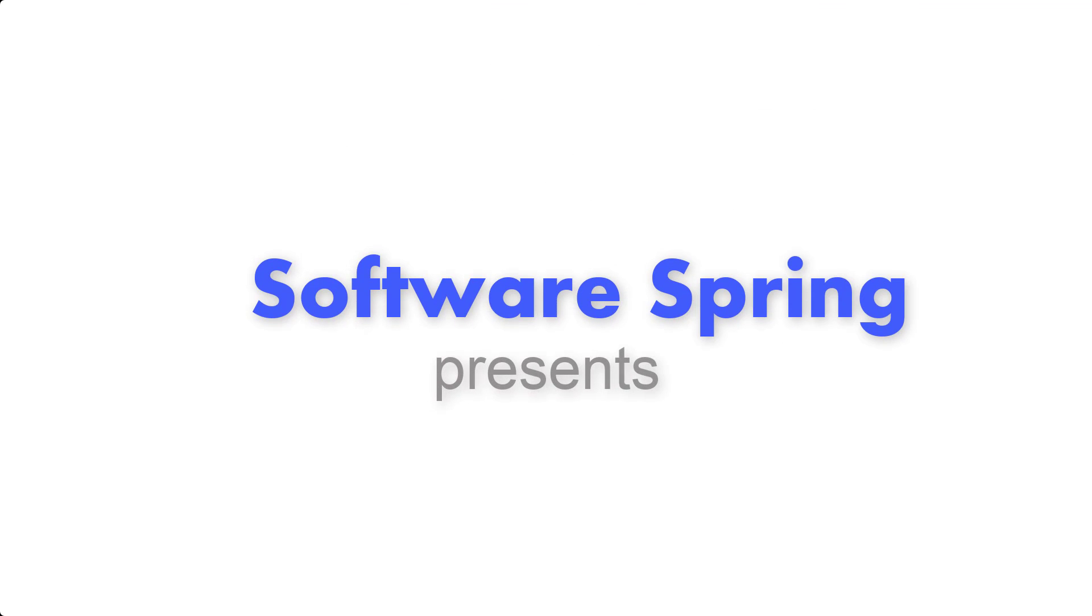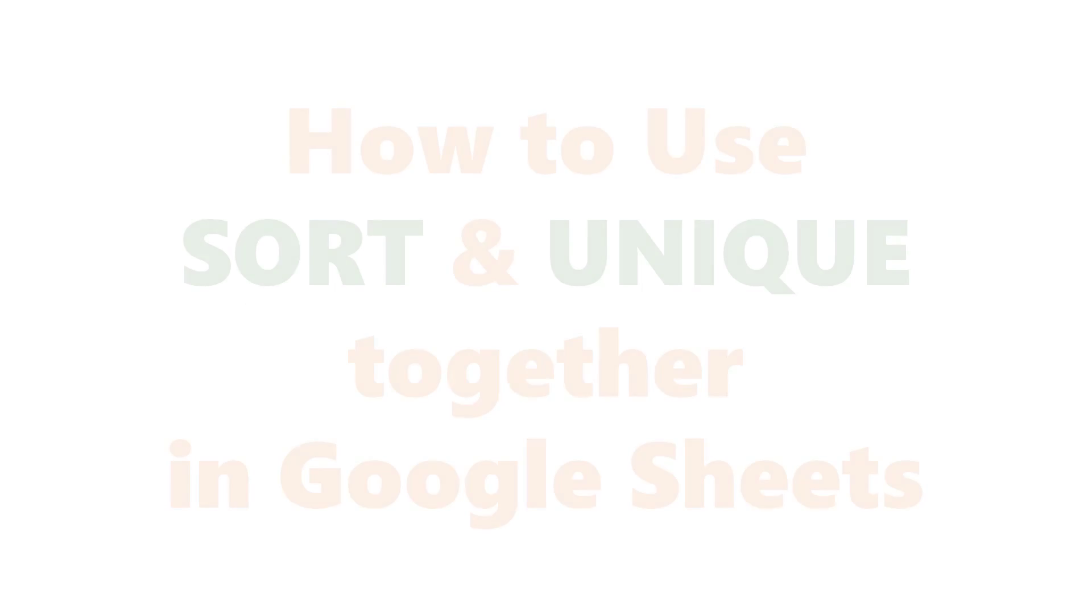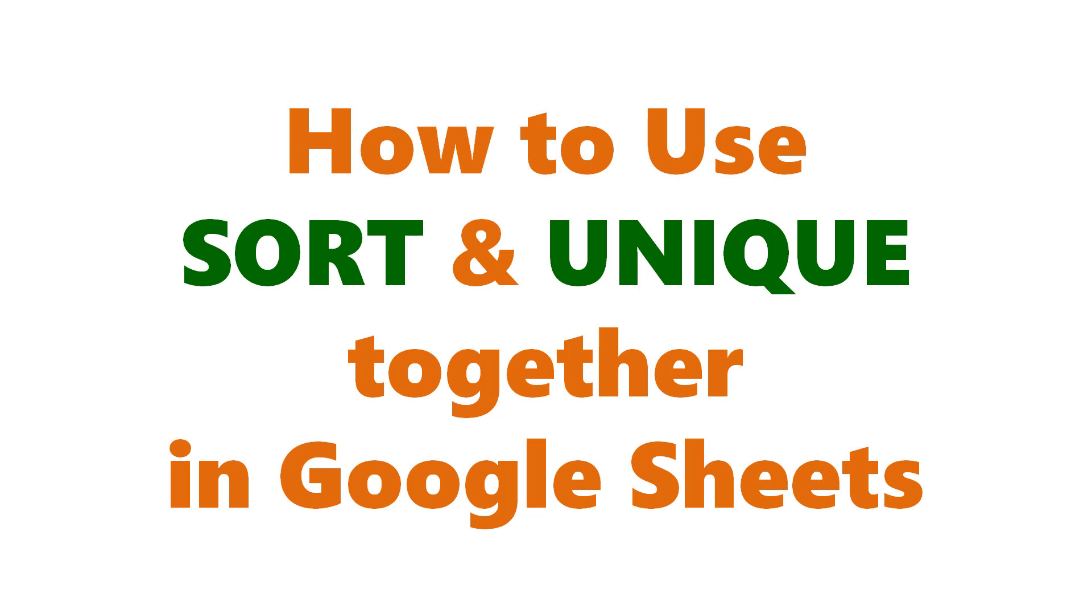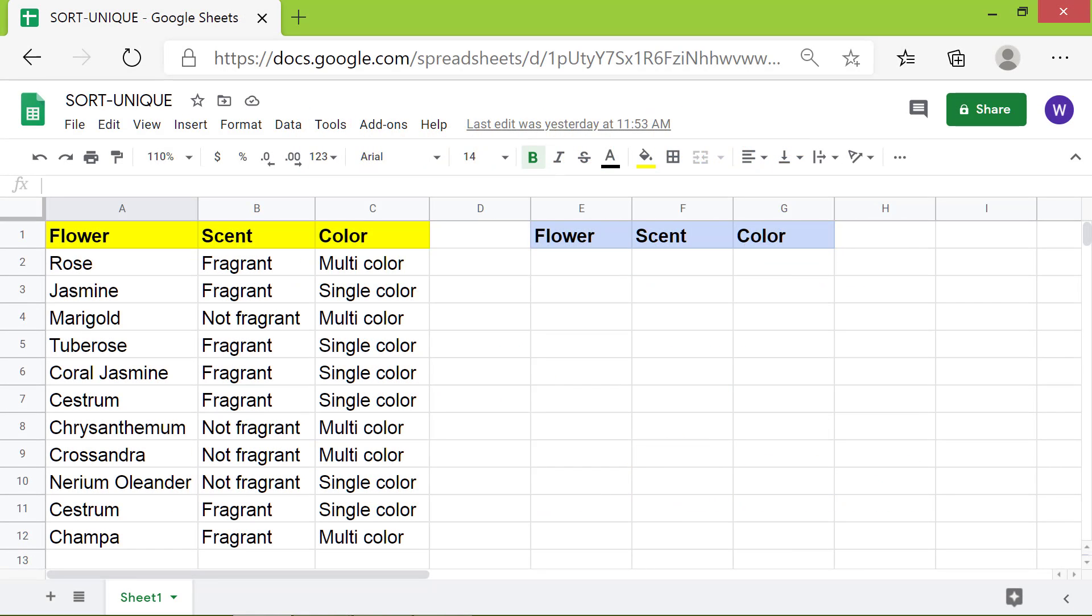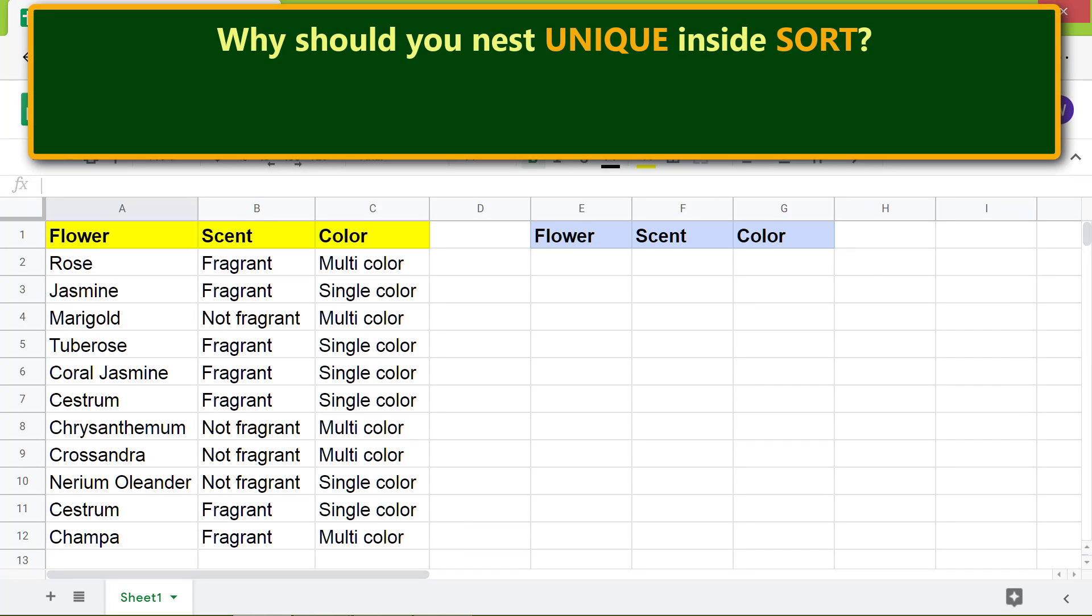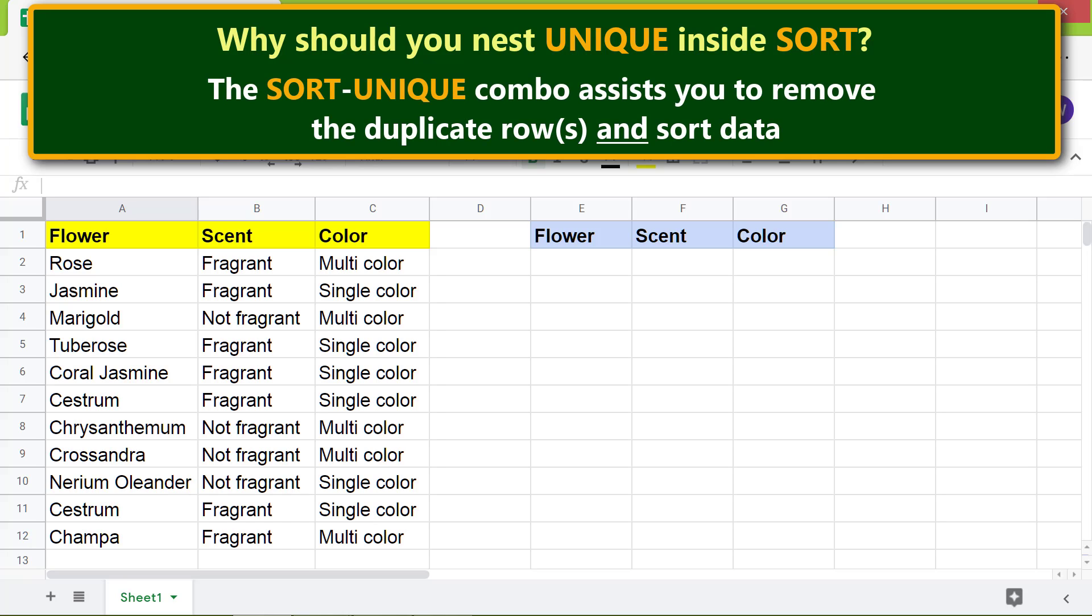Hello folks, welcome to this tutorial on using the SORT and UNIQUE functions together in Google Sheets. Why should you nest UNIQUE inside SORT? The SORT-UNIQUE combo assists you to remove duplicate rows and sort data.